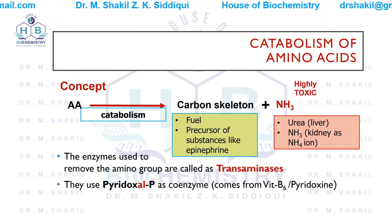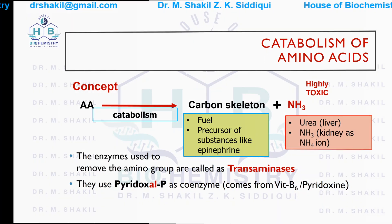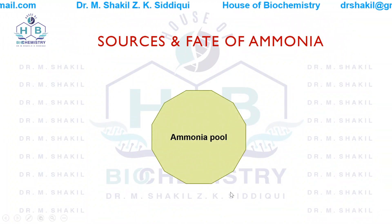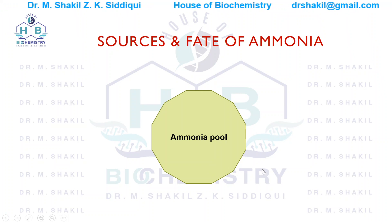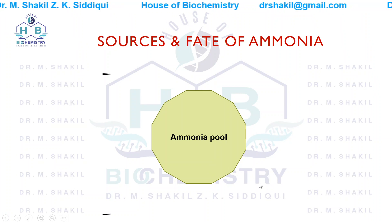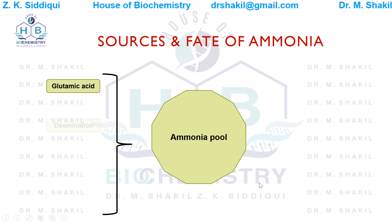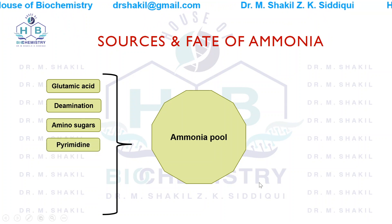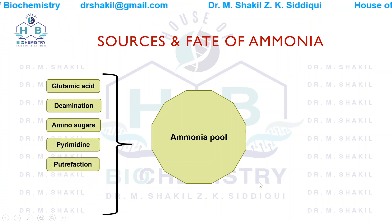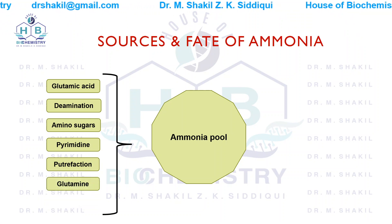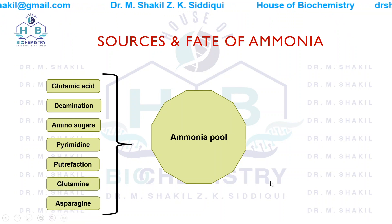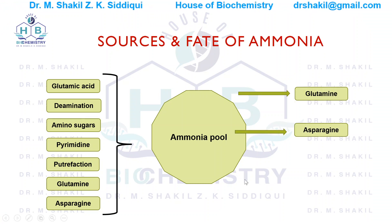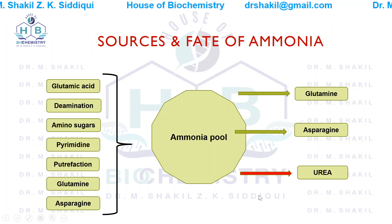A small ammonia pool is maintained in our body. Ammonia comes from glutamic acid, deamination reactions, amino sugars, bacterial putrefaction, glutamine, and asparagine. This ammonia can further be utilized to form glutamine and asparagine, or excreted as waste product urea.